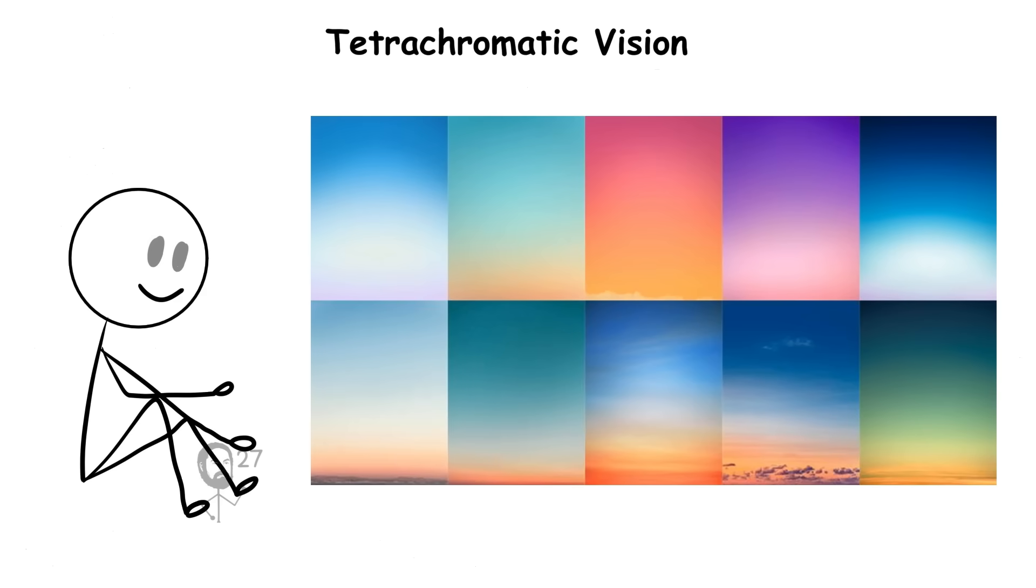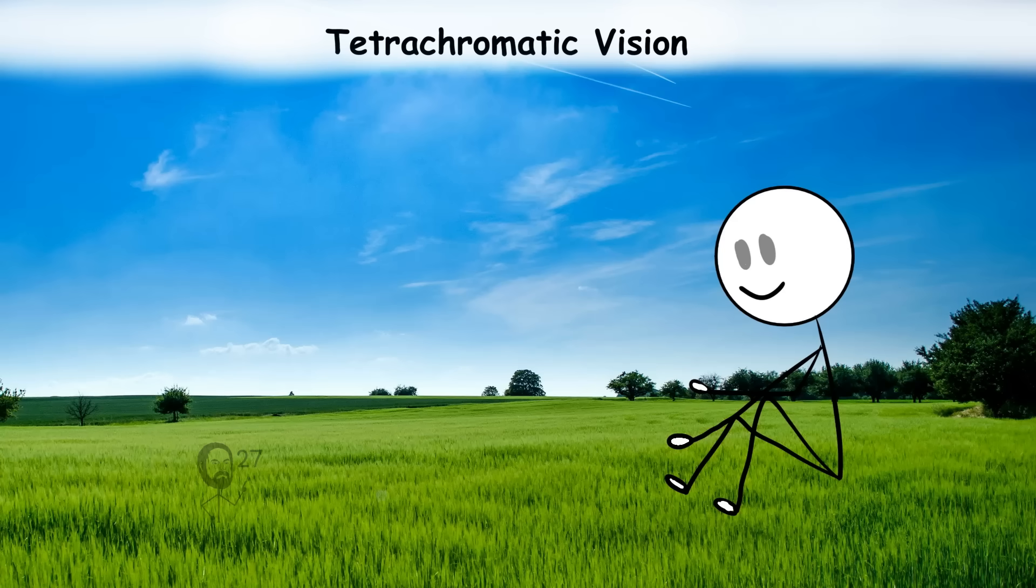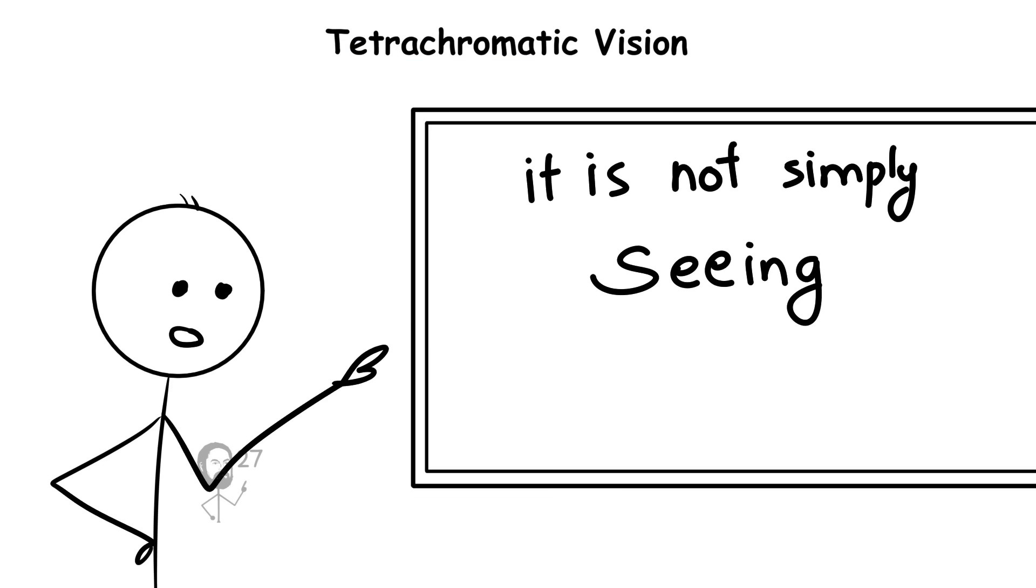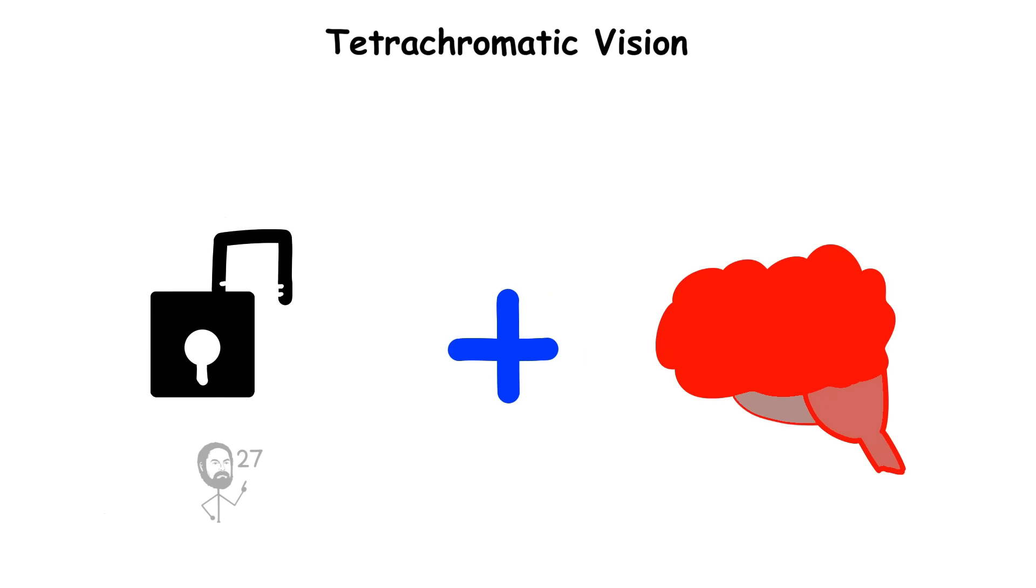This heightened vision extends to sunsets, fabrics, or even food presentation, making the world appear saturated with variation that others cannot detect. It is not simply seeing more vivid colors, it is an expanded spectrum of perception, like unlocking an additional sense within sight itself.